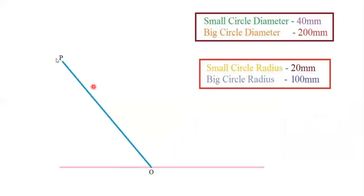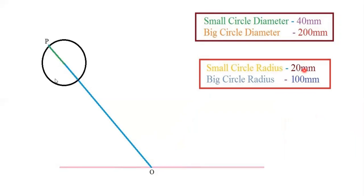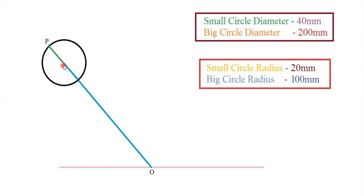Now, the distance between O and P is 100 mm — the big circle radius. We also need to draw the small circle. From P, going inward 20 mm along the line gives you the center of the small circle. From P to the green line denotes the small circle radius, which is 20 mm. Take 20 mm radius in your compass, keep that center point, and draw a circle.